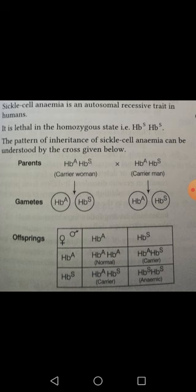Now let me show the figure. In this cross, a carrier woman HbA HbS and a carrier man HbA HbS produce gametes HbA and HbS each. The four possible offspring are: HbA HbA — normal; HbA HbS — carrier; HbA HbS — carrier; and HbS HbS — anemic. This shows how the autosomal recessive disorder is passed on.